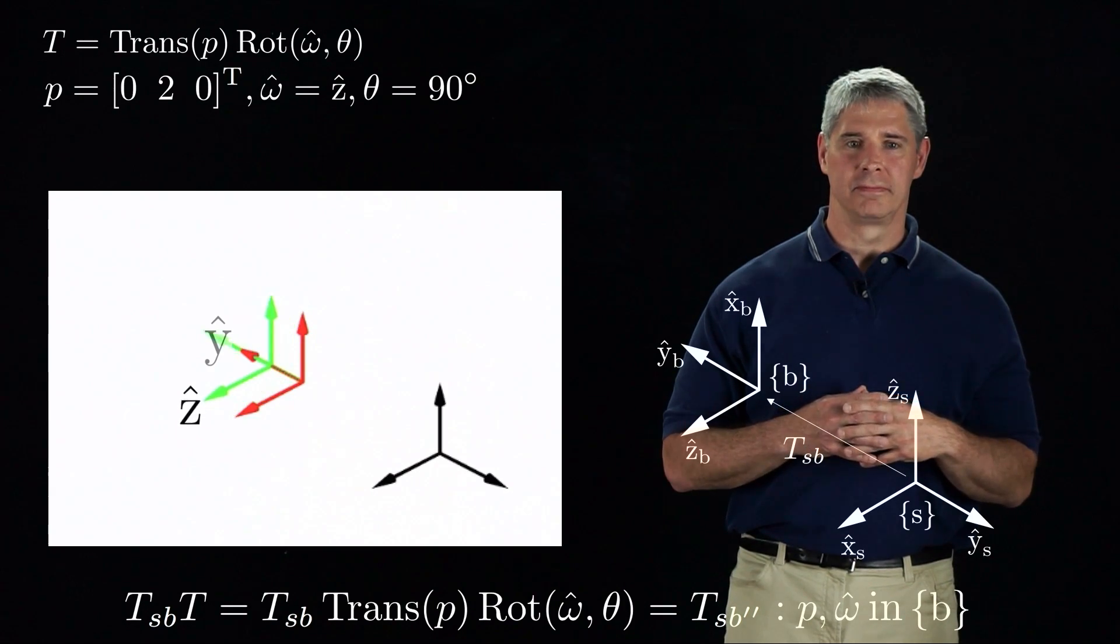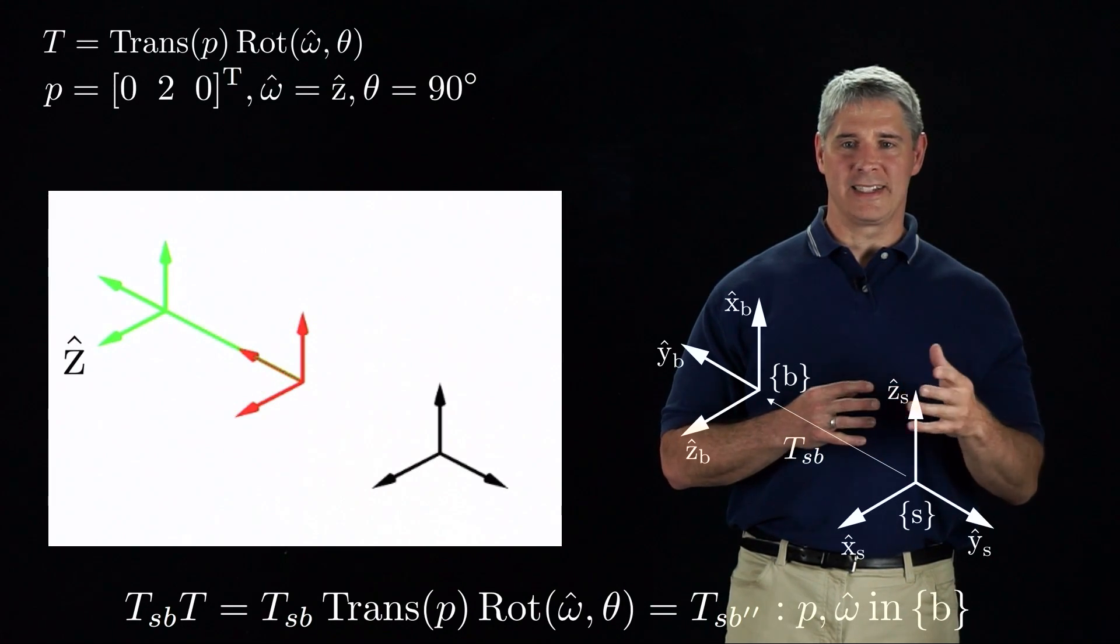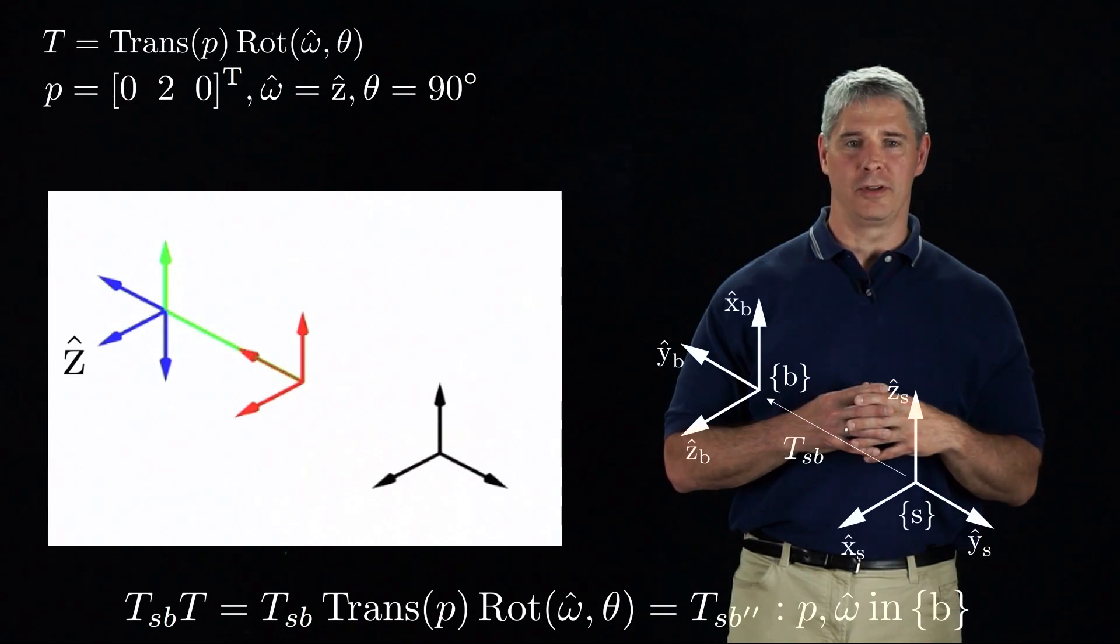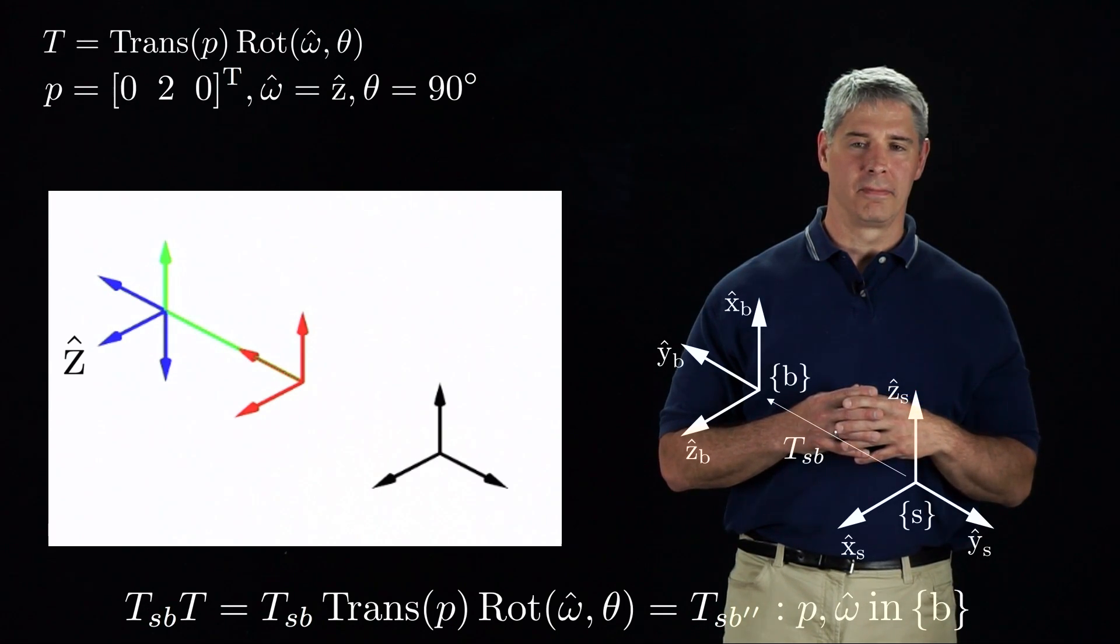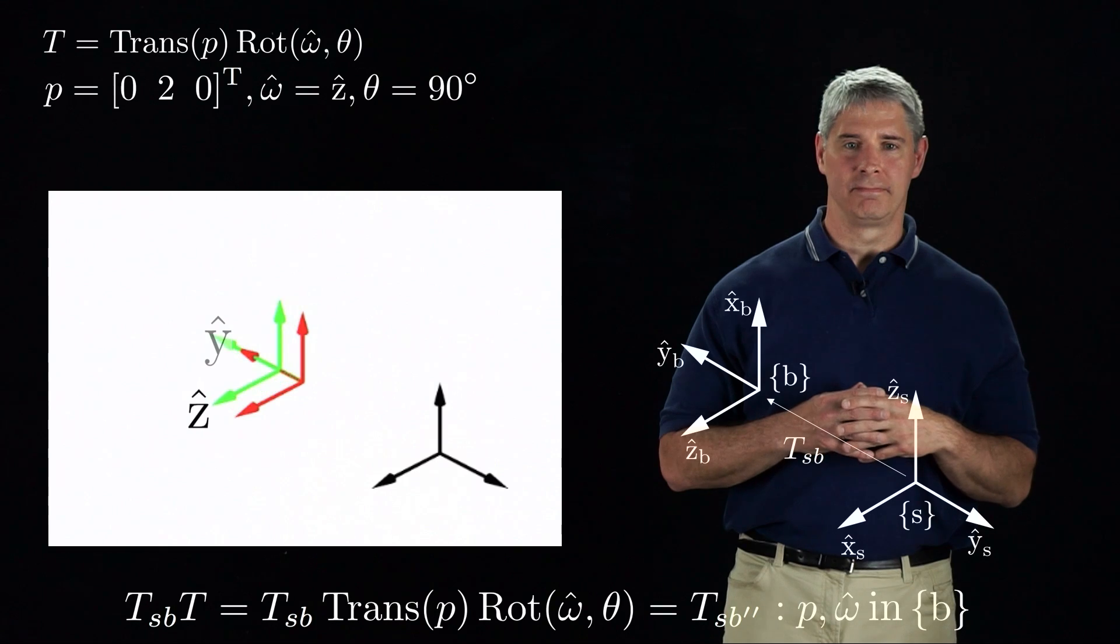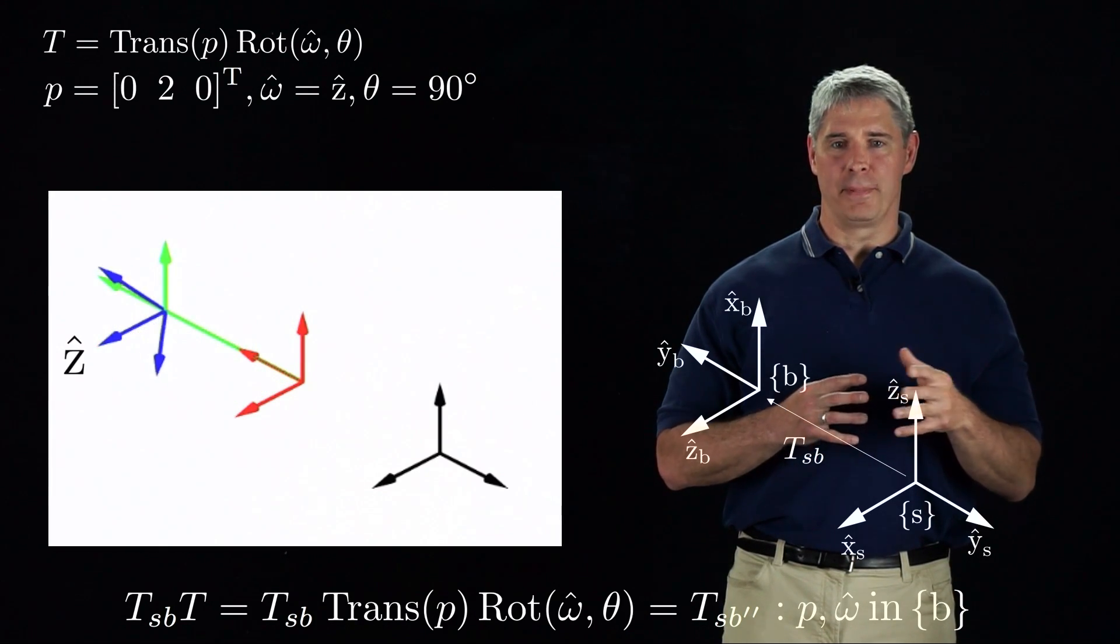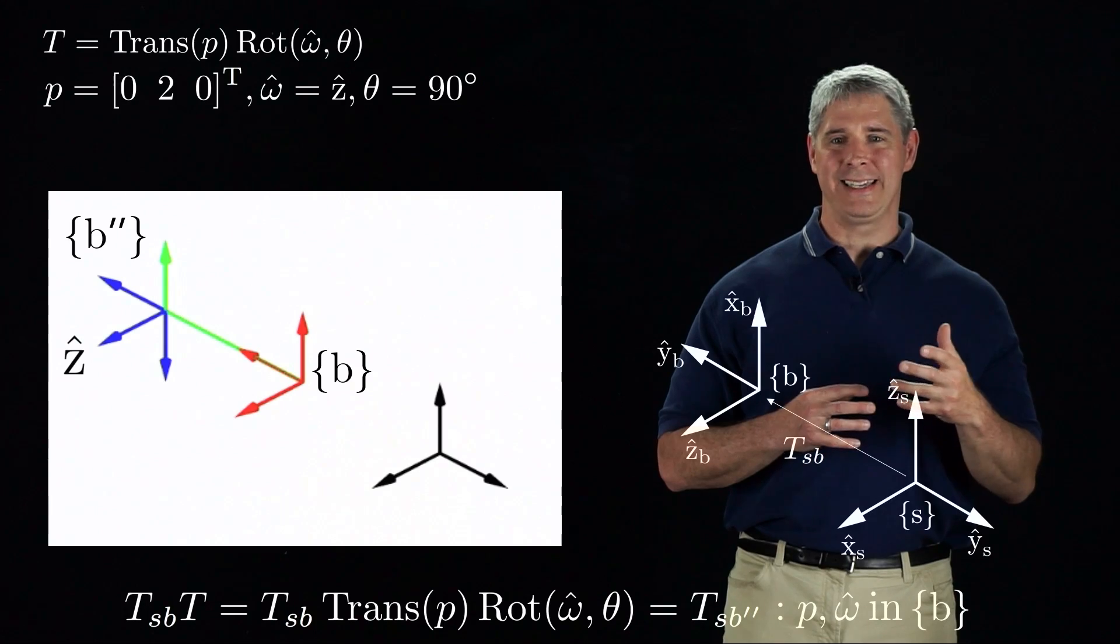Let's run the animation. Notice that the body's z-axis used for rotation in the second step moved along with the frame during the initial translation. And now one more time. Notice where the B-frame ends up. We call this new frame B-double-prime.